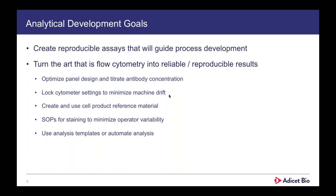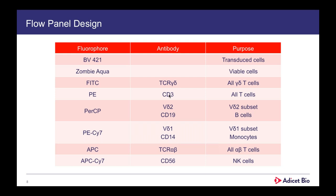Our goals in analytical development at Adeset are to create reproducible assays that will guide process development and eventually manufacturing. We need to turn the art of flow cytometry into something reliable and reproducible. We've addressed several aspects: optimizing panel design, titrating antibody concentration, locking cytometer settings, creating and using cell product reference material, developing SOPs for staining to minimize operator variability, and using analysis templates or automated analysis. The one outstanding point that was lacking was that we were still doing manual centrifugation — these were the steps we knew of until we realized the DA cell existed.